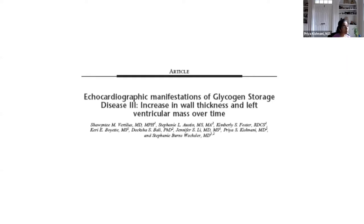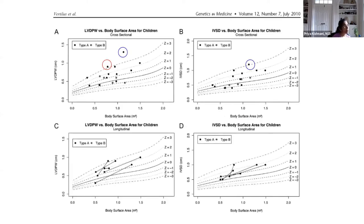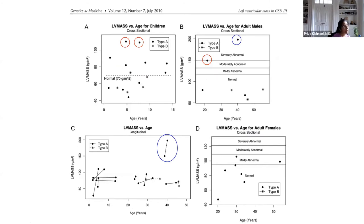Work from Duke has shown increases in wall thickness and left ventricular mass over time in GSD type 3 patients, as evaluated by echocardiogram. Measurements in different regions of the heart show increases above the normal range, even in young children. In older patients, heart mass tends to increase over time and can be mildly abnormal in the vast majority. Nutritional management helps, but what's occurring at the microscopic level of the heart remains unclear.